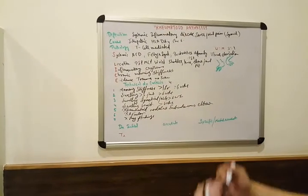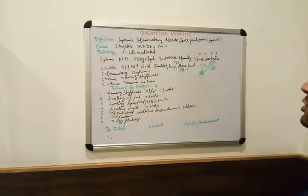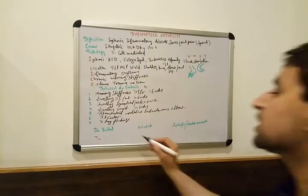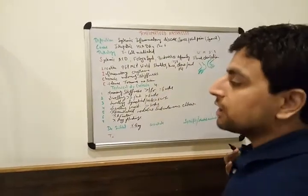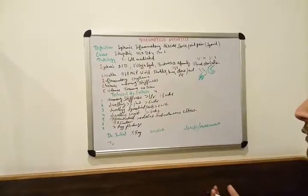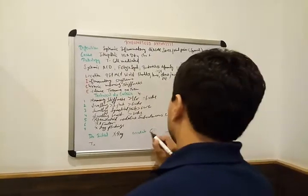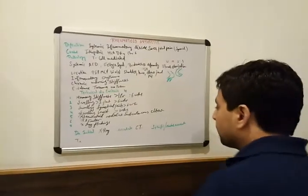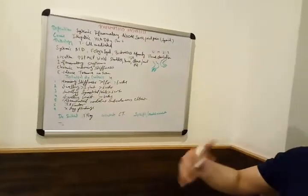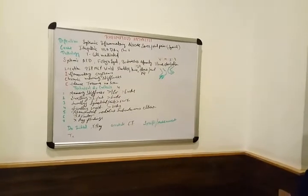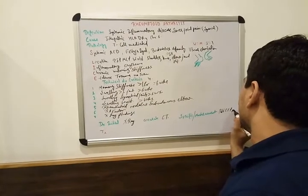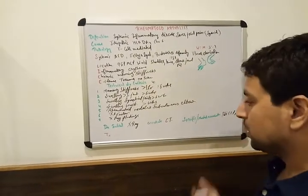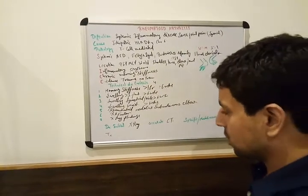The initial diagnosis of Rheumatoid Arthritis is by X-ray. The most accurate investigation is CT scan. The most specific marker is Anti-CCP antibodies — anti-cyclic citrullinated peptide antibodies.